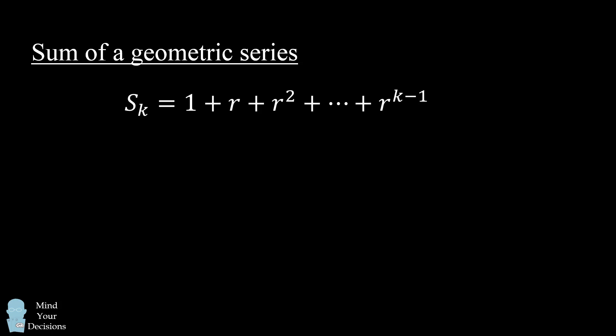To find the sum, we do a neat little trick. We multiply the sum by the common ratio r. Look at what this will do to each term. The first term 1 becomes r, the second term r becomes r squared, and the pattern continues.